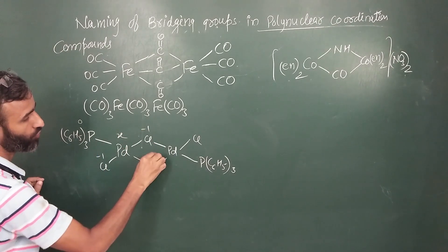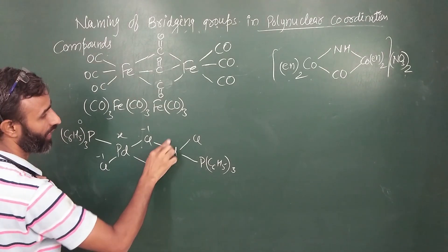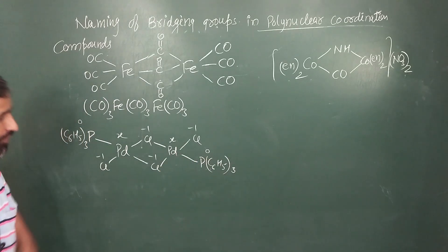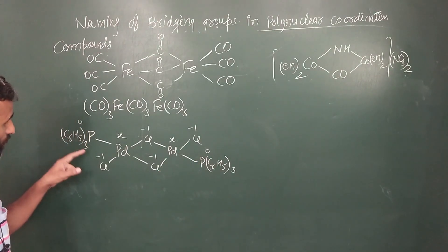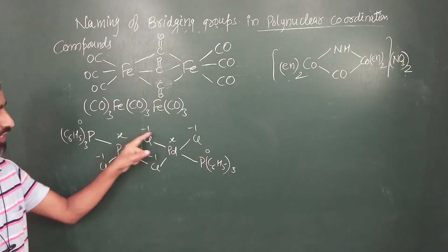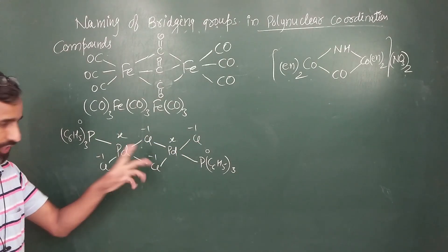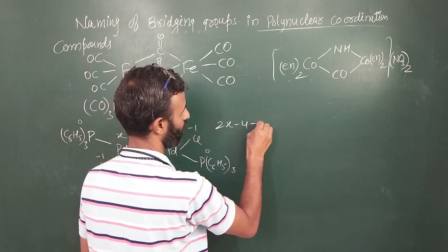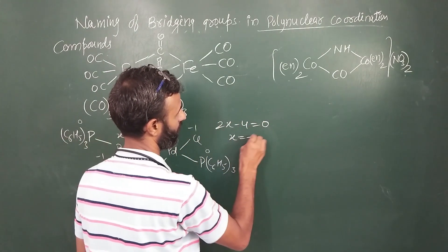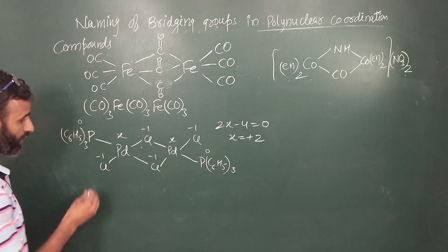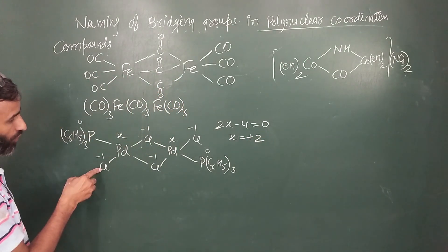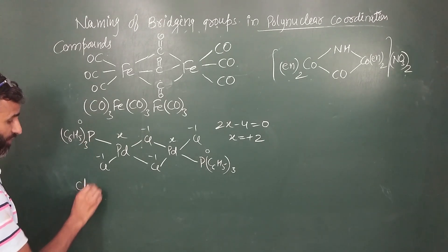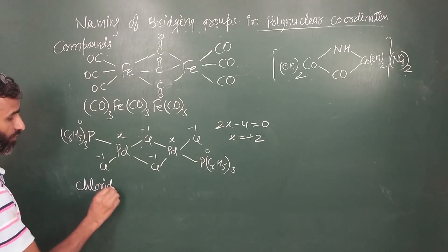X, minus 1, minus 1. X, minus 1, zero. Minus 1, minus 1, minus 1, minus 1 equals minus 4. X, X — 2X equals 0. X is plus 2.